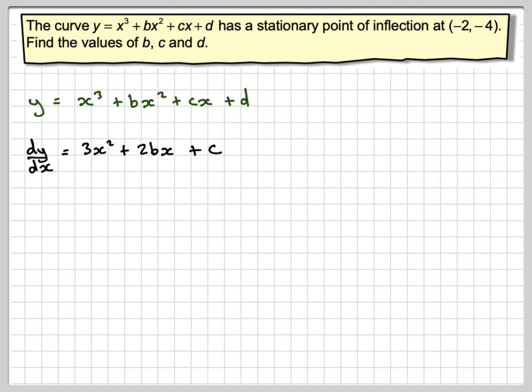And then for stationary point of inflection, we will need to find the second derivative as well. So differentiating again, we get 6x plus 2b, and if you differentiate a constant, you get nothing.